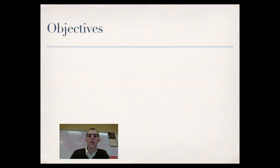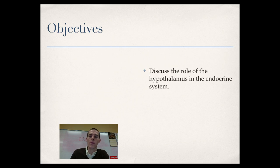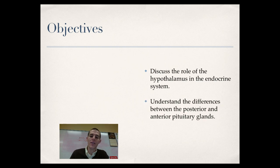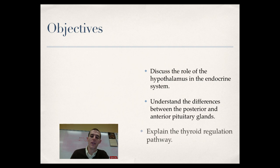By the end of this video, there are three things that I need you to know or be able to do. The first one is to discuss the role of the hypothalamus in the endocrine system. Second, understand the differences between the posterior and anterior pituitary glands. And finally, explain the thyroid regulation pathway.